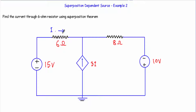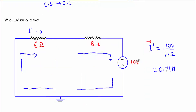Now let me solve the circuit for current I. First, I will keep the 10 volt independent source active, replacing the other independent voltage source with a short circuit and the current source with an open circuit. For the 10 volt source, the current flowing through the 6 ohm resistor is I prime. Using simple Ohm's law, the total supply voltage is 10 volts and the total resistance is 8 plus 6 equals 14 ohms. Therefore I prime equals 10 divided by 14, which gives 0.71 ampere.